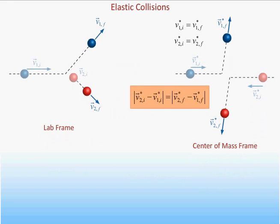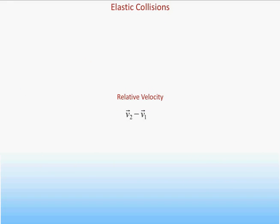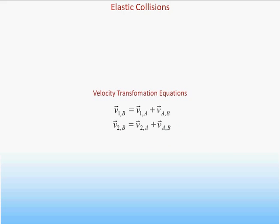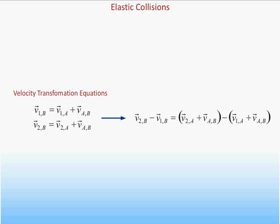We can now use this result to identify elastic collisions in any inertial reference frame. Namely, the relative velocity of two objects at a given time — that is, the difference in the velocity vectors of the objects — must be the same in all inertial reference frames. This claim follows from the fact that to transform both velocity vectors to a different inertial frame, we simply add the same vector, the relative velocity vector for the two frames, to each initial velocity vector. This relative velocity vector then cancels when we take the difference of the velocities of the objects.